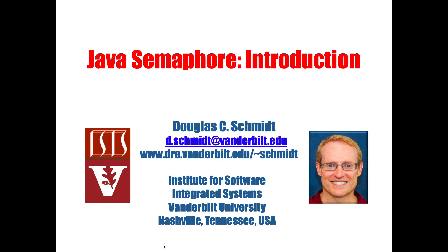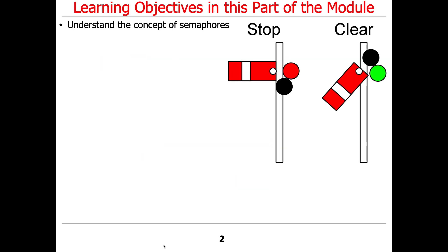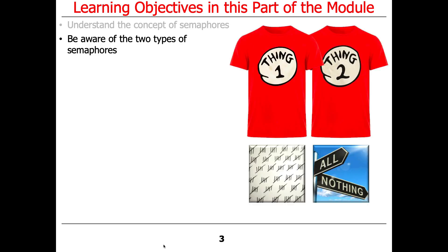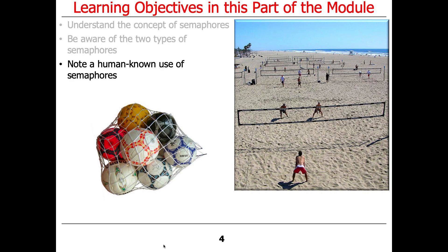Last time we talked a little bit about synchronization, and today we're going to talk more about synchronization. I'll give you a bigger overview of what synchronizers are. But to get you bootstrapped with assignment 1b, I wanted to start talking about a particular example of a synchronizer called a semaphore. We'll focus initially on the concept of what a semaphore is, and then we'll start exploring how you program them with Java semaphores, and we'll also talk about the two different types of semaphores.